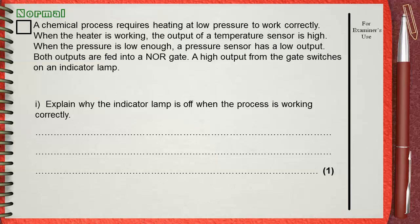I explain why the indicator lamp is off when the process is working correctly. It's clear that our process requires heating and low pressure according to the question.